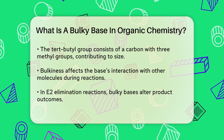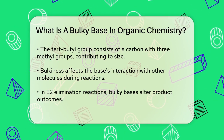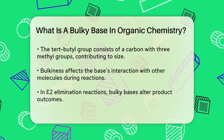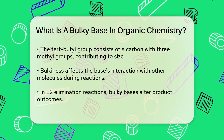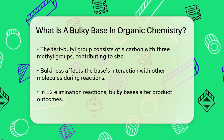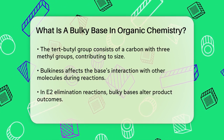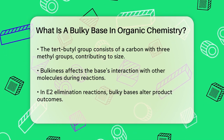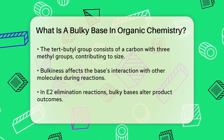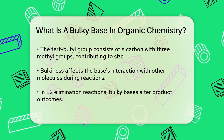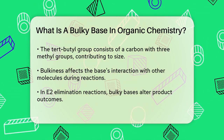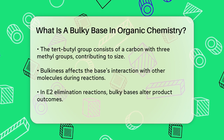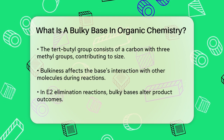When it comes to E2 elimination reactions, the bulkiness of the base plays a significant role. Normally, according to Zaitsev's rule, the more substituted alkene is the preferred product because it is more stable. However, when a bulky base is used, the situation changes.